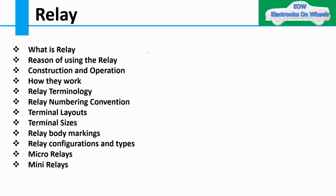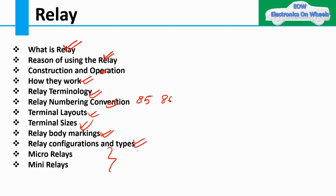So what topics am I going to cover in this relay video? First: what is the relay. Then reason of using the relay. Then construction and operation — how they work exactly, what terminology they use. Then numbering convention — you might have heard 85, 86. Then terminal layout, terminal sizing, body marking, configuration and types of relay — micro relay, mini relay — and what conditions we use them in, with a practical example. Today I'll cover three topics and try to finish in 10 minutes.